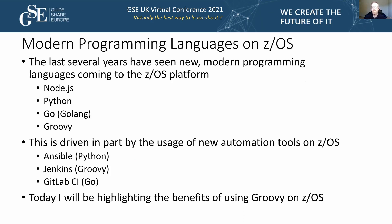In the last couple of years, there are a lot of new technologies coming to the mainframe, to the ZOS system. It's not just COBOL, PL1, and Assembler anymore. Now you see languages on ZOS like Node.js and Python, and recently they just ported over Go, or sometimes known as Golang. What I'll be talking about today is Groovy as well.